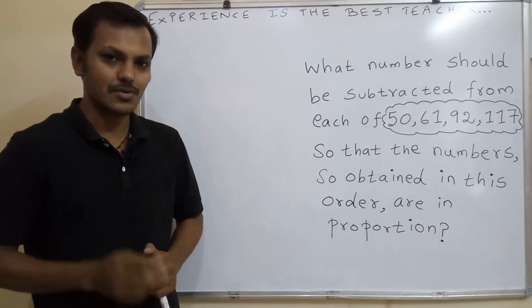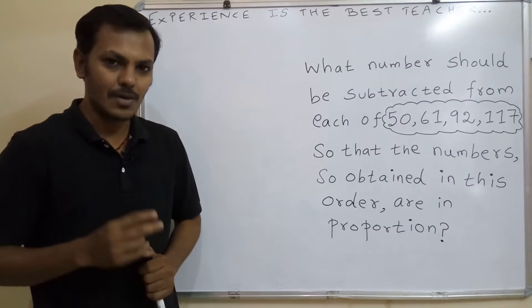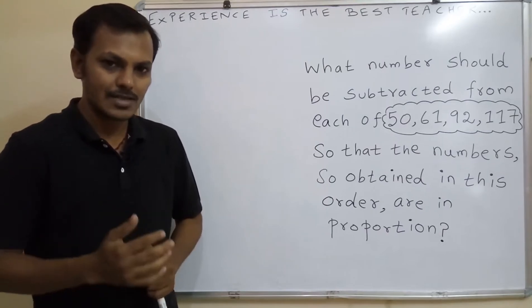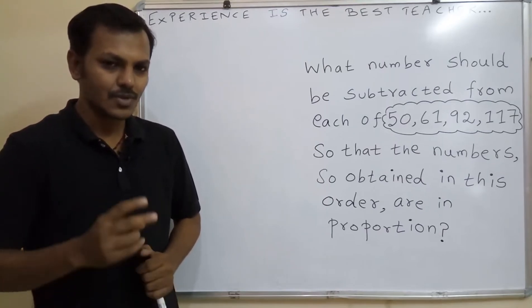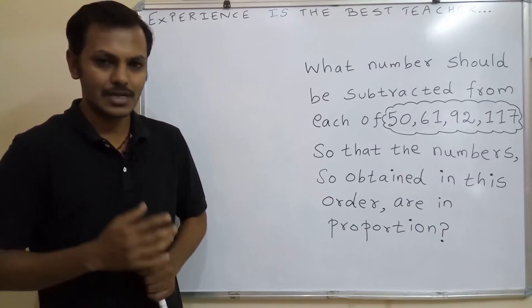You know proportion - we need four terms, two ratios to form a proportion. We need two terms to form a ratio. So after we get the ratio, only we can get the proportion. Two ratios when equal - that is proportion.